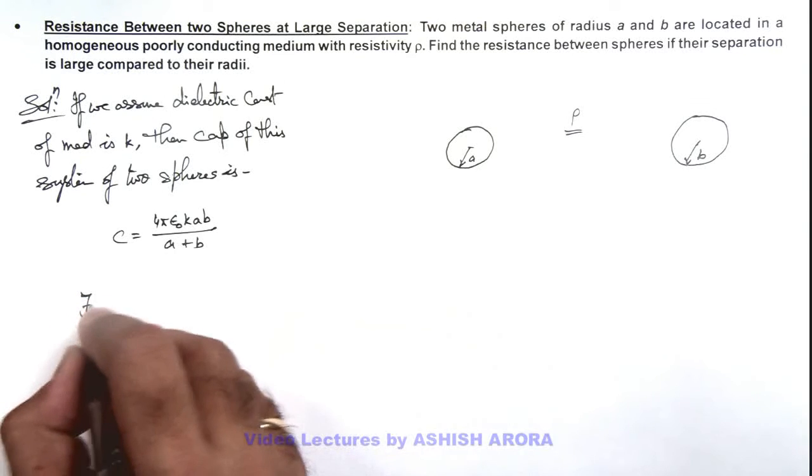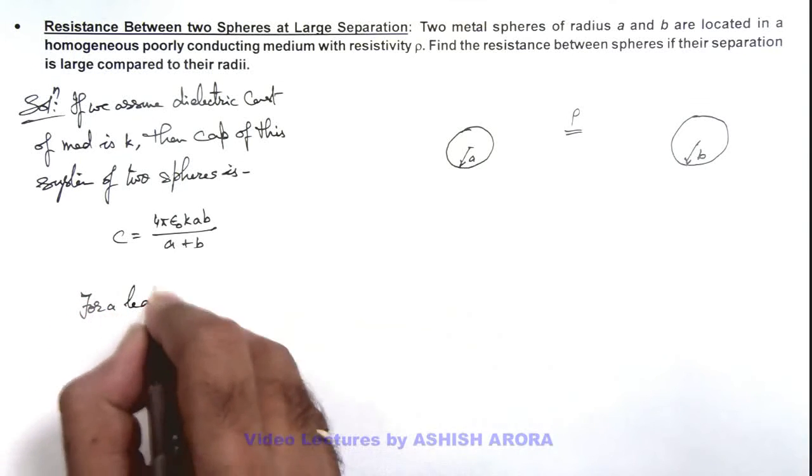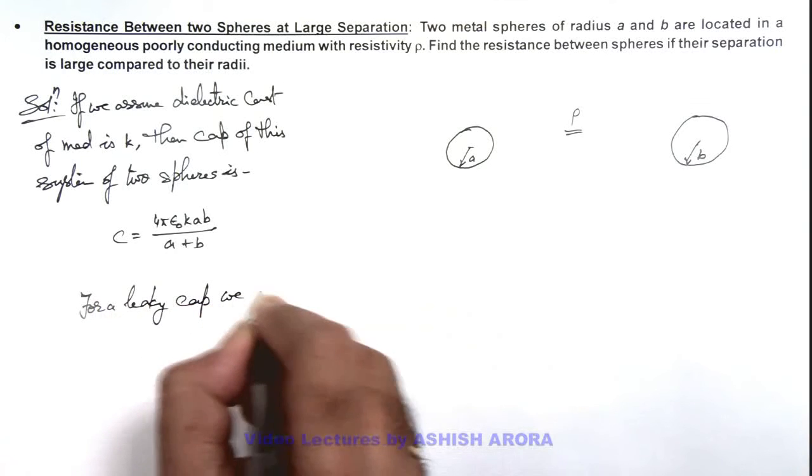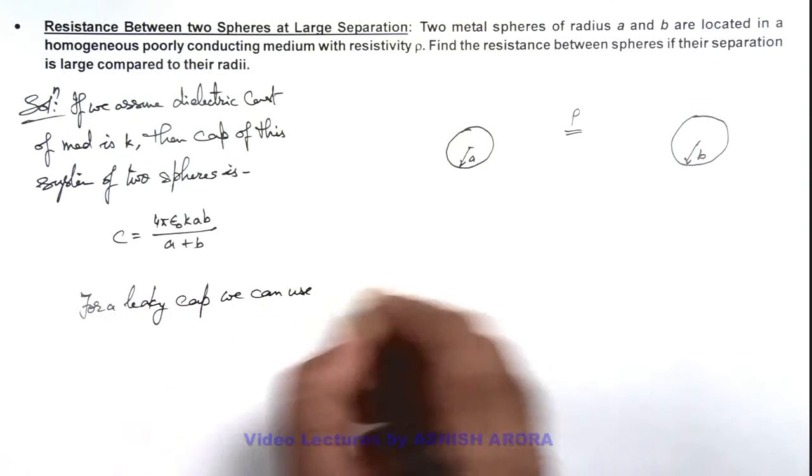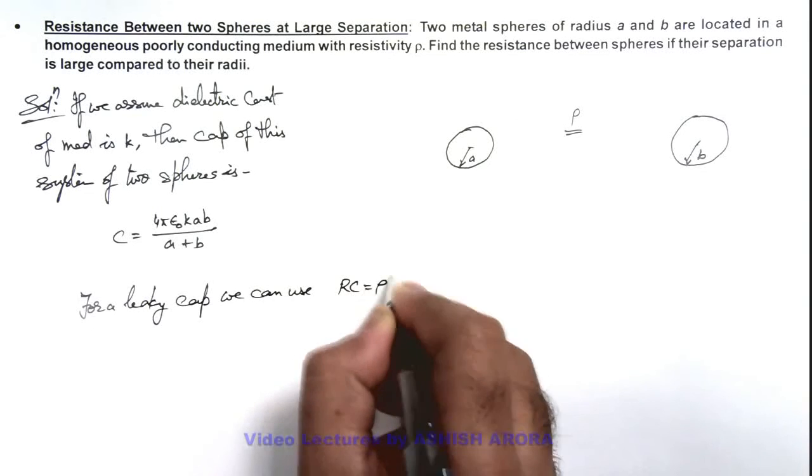For a leaky capacitor, we can use RC = ρ k ε₀.